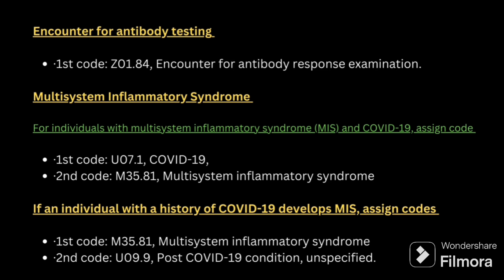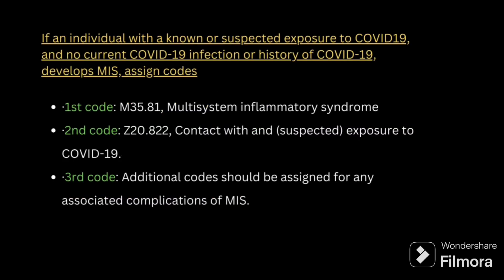Multi-system inflammatory syndrome (MIS) means all systems are affected. If COVID is present along with MIS, first code COVID and second code for multi-system inflammatory syndrome. If an individual with known or suspected exposure to COVID but no current COVID infection or history of COVID develops MIS, first code MIS, second code for exposure to COVID-19, and third code for any complications related to MIS.